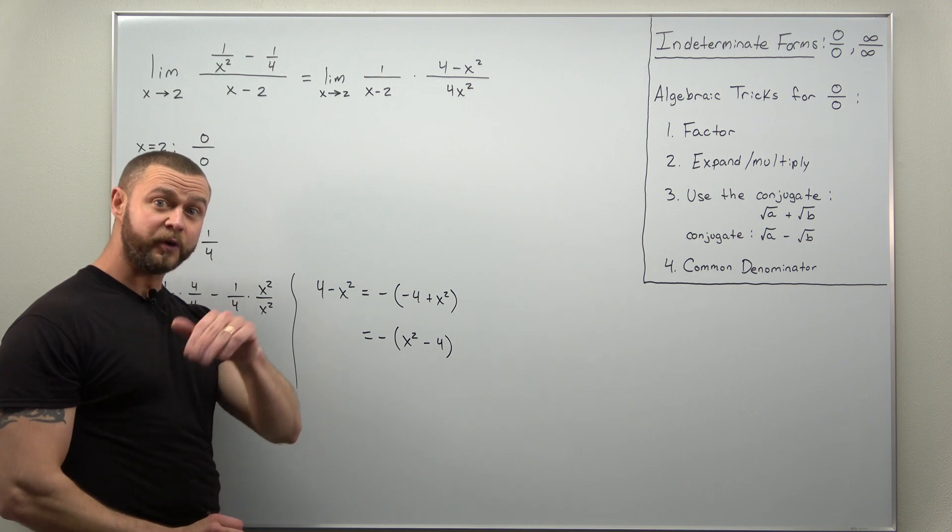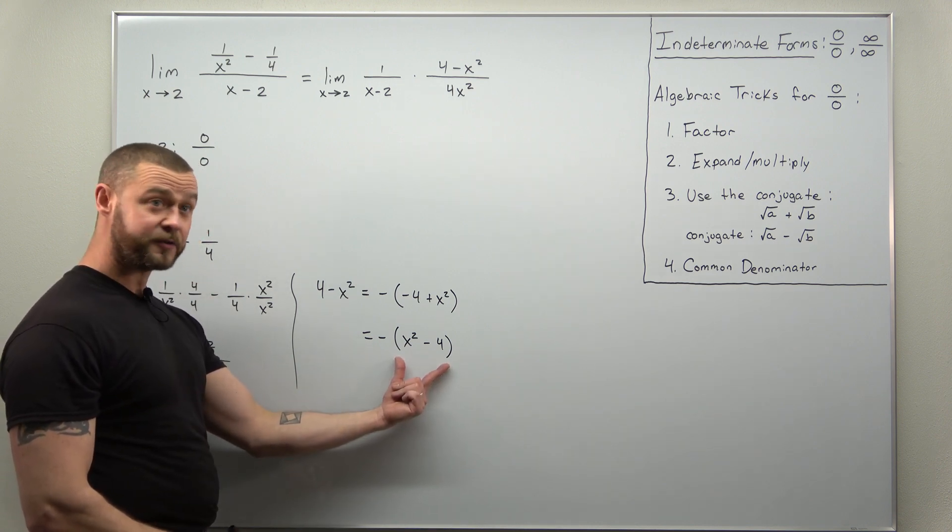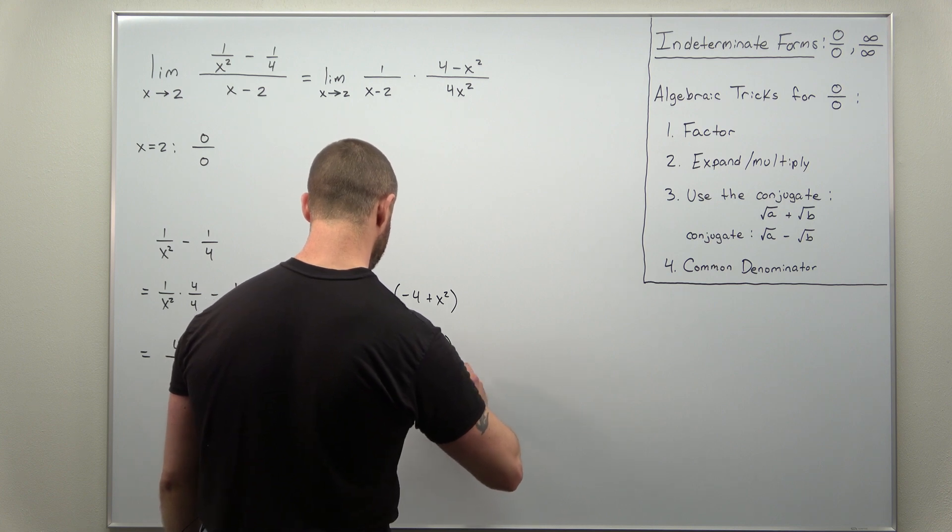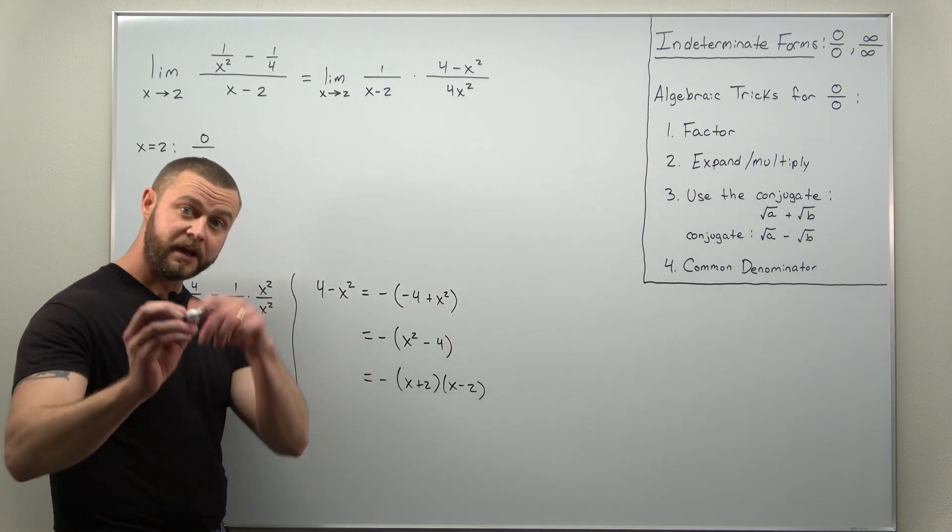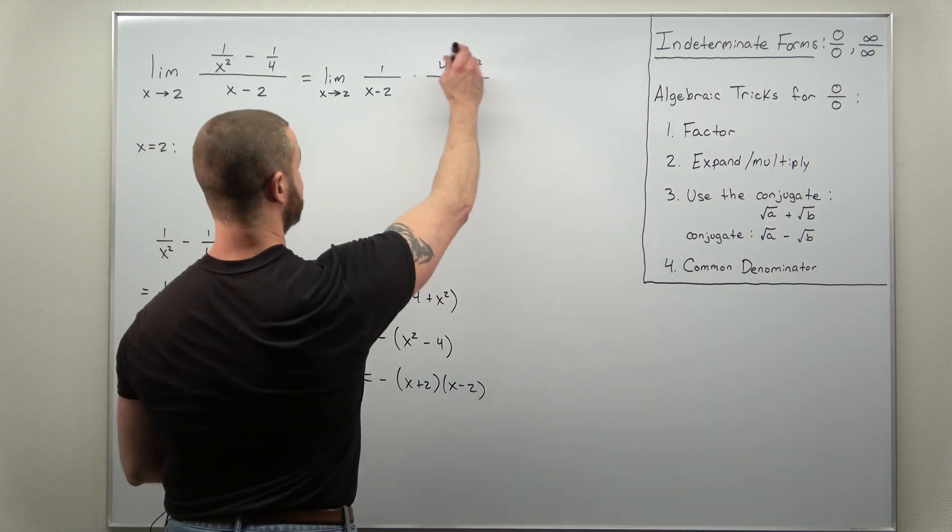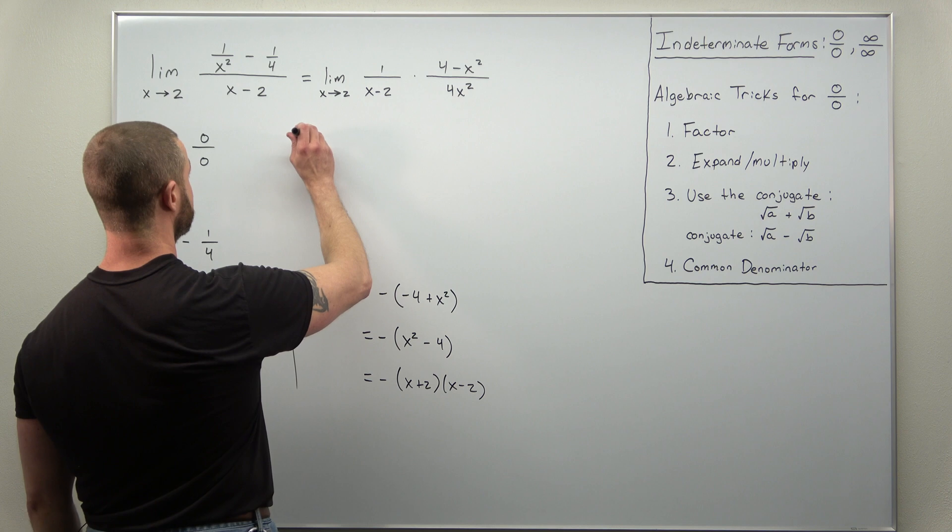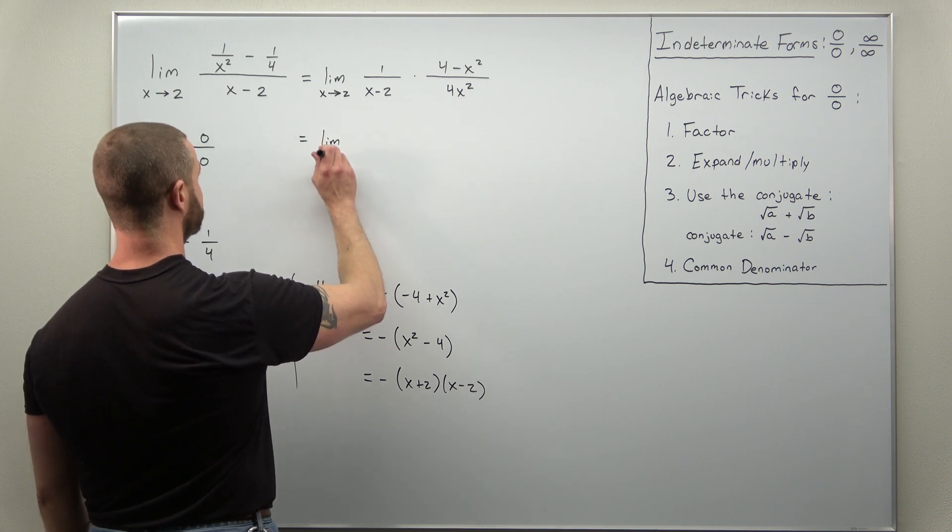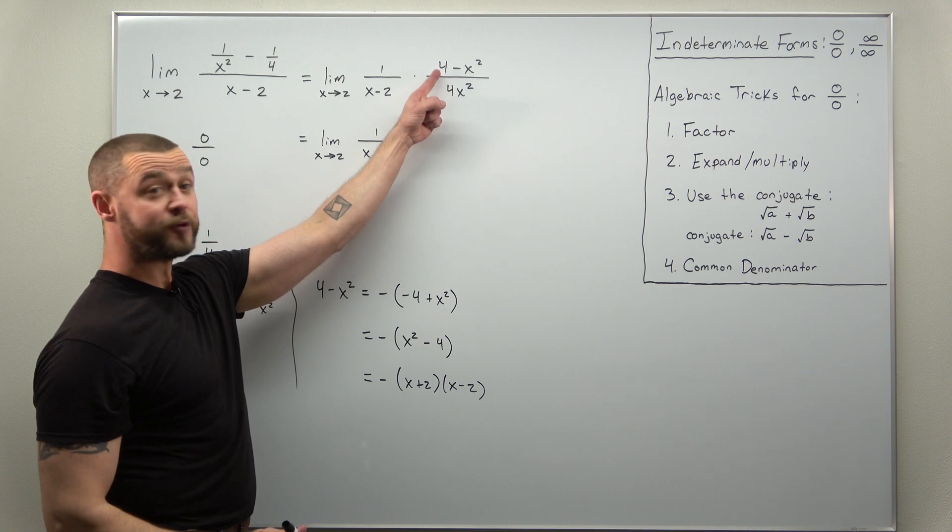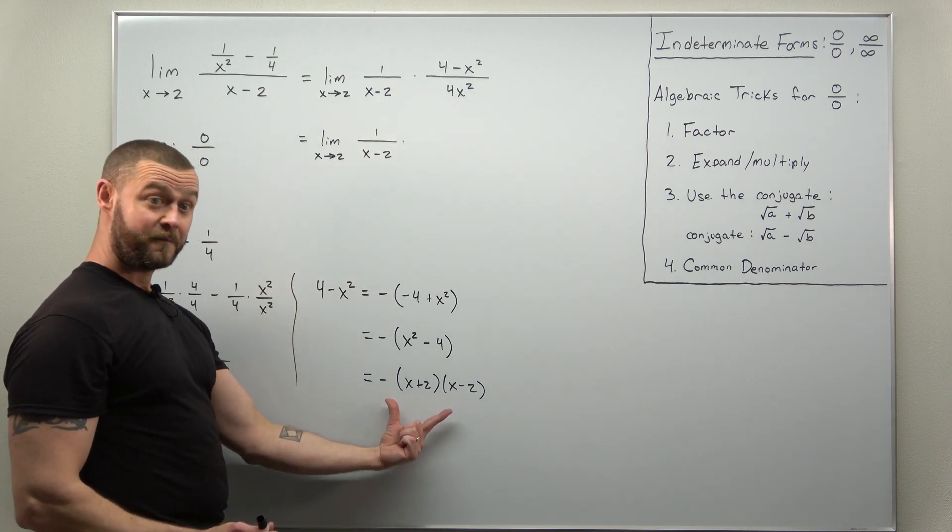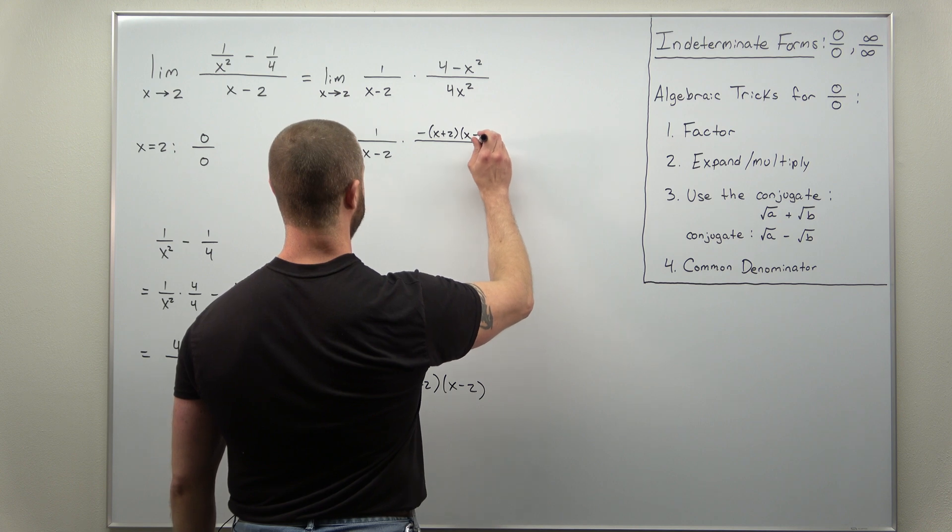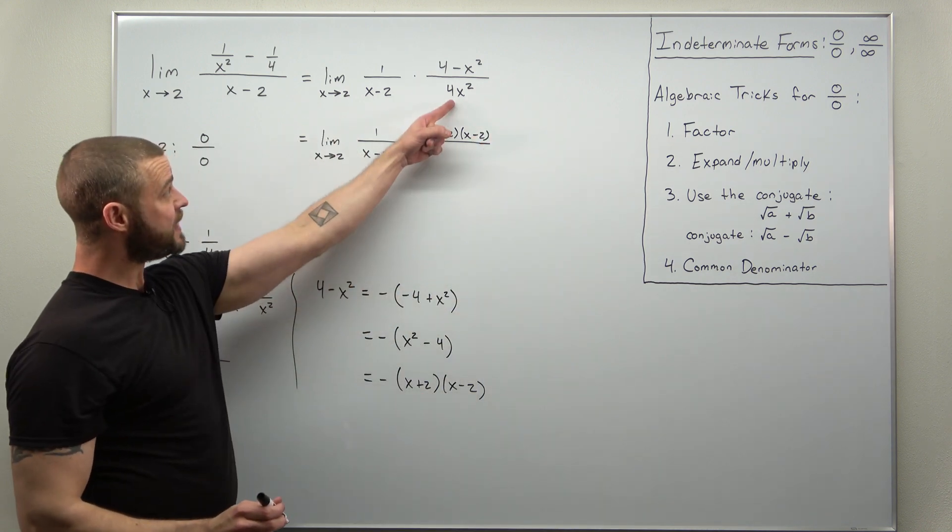And that should make the rest of the algebra really simple. Notice here we can factor that. That's now easy to factor as a difference of squares: x plus 2 times x minus 2. And now we just need to plug that back in, and you can see the x minus 2 factors are going to cancel. So let's plug that back up in there. For the numerator, for 4 minus x squared, we still have the limit as x approaches 2 of 1 over x minus 2, and now times we rewrote that numerator as negative x plus 2, x plus 2 times x minus 2. And we didn't do anything with that denominator 4x squared.